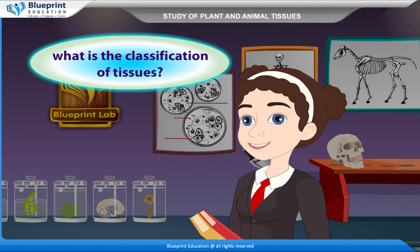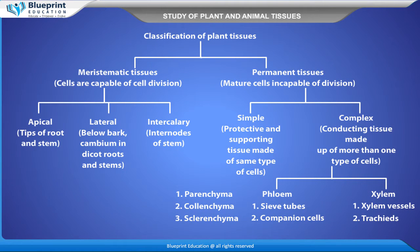Classification of plant tissues: Meristematic tissues — cells are capable of cell division. Permanent tissues — mature cells incapable of division. Meristematic tissues are classified as apical, lateral, and intercalary, found at tips of root and stem, below bark (cambium) in dicot roots and stems, and at internodes of stem. Permanent tissues include simple tissues — protective and supporting tissue made of same type of cells — and complex tissues — conducting tissue made up of more than one type of cell.